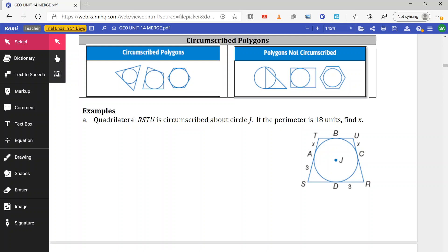So we can use the fact that these different segments meet at an exterior point being tangent to the circle, which means each part is going to be congruent. So here's the exterior point, meaning on that triangle, those two segments are going to be the same. I can use that to my advantage to figure out the perimeter of quadrilateral RSTU here if it's circumscribed around circle J. We are told the perimeter is 18 units and we need to find X.